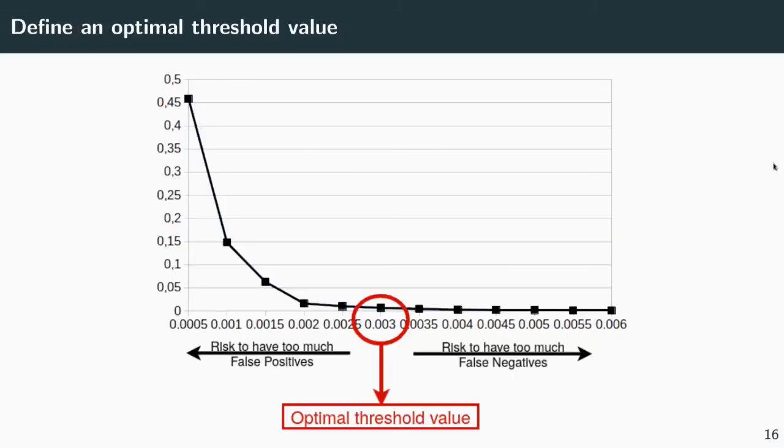We define the threshold value based on the false positive rate as a function of the reconstruction error. The objective is to find the optimal value. If it is too low, on the left, we risk having too many false positives and that overwhelm the security analyst. Based on the traffic on Monday, which is solely normal traffic, we choose a value of 0.003. Indeed, above this threshold, the number of false positives remains fairly stable.